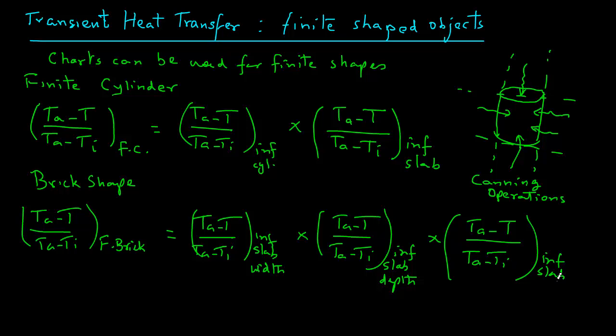So, in other words, we can use the chart for infinite slab three times and multiply the three temperature ratios we get to obtain the temperature ratio for the finite brick shape. Again, we will work through a numerical example in another module to see how we can obtain temperature ratio for a brick shape.